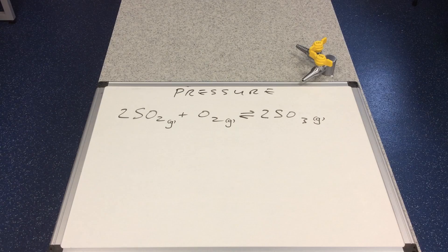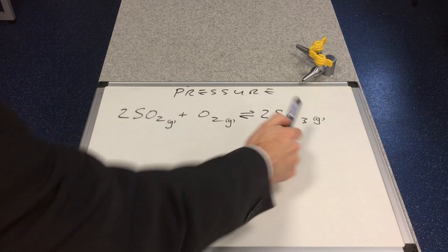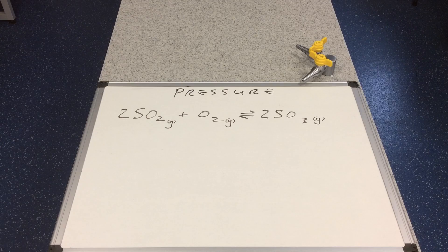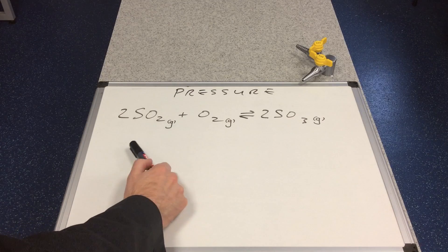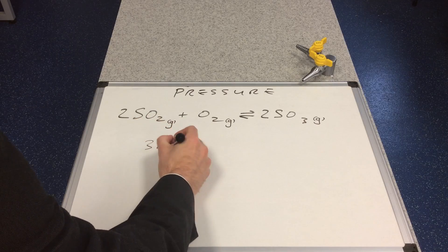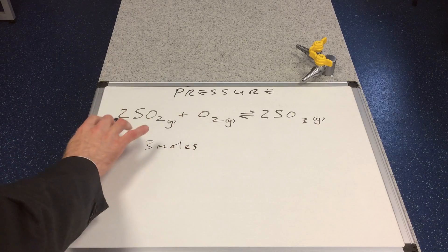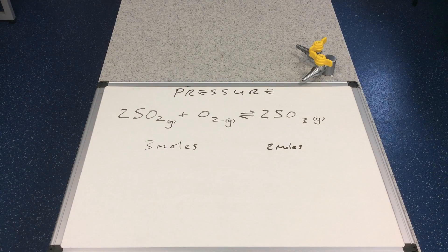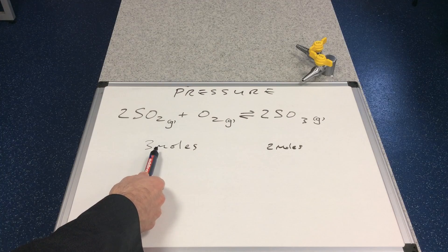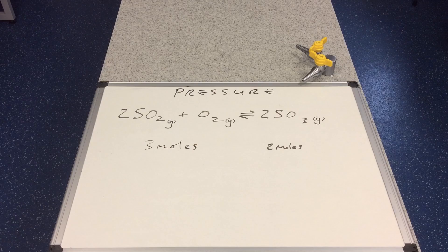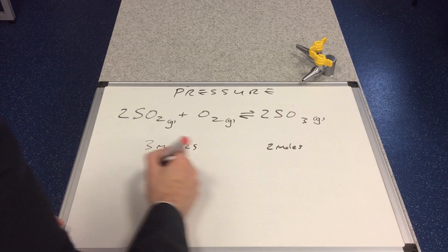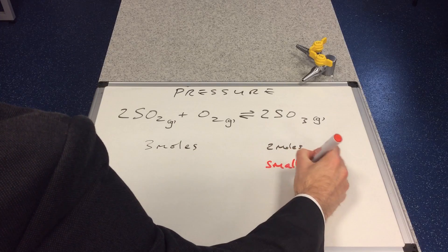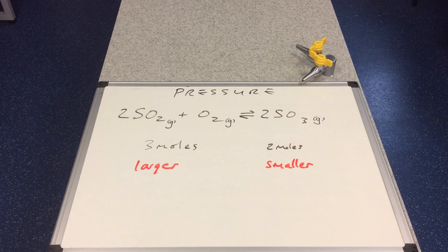Looking at pressure now — I've added state symbols to show that these are all gaseous substances. With pressure, you first need to establish which side has the greatest volume. We have 3 moles of gas on the left hand side: 2 moles of SO₂ and 1 mole of O₂. We have 2 moles of gas on the right hand side. So at standard temperature and pressure the left is the larger side and the right is the smaller side.